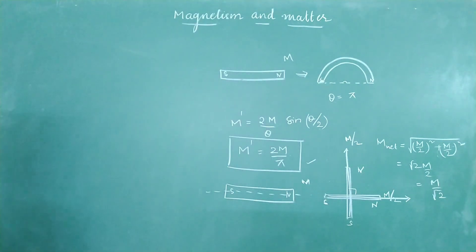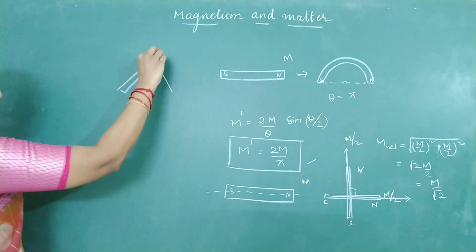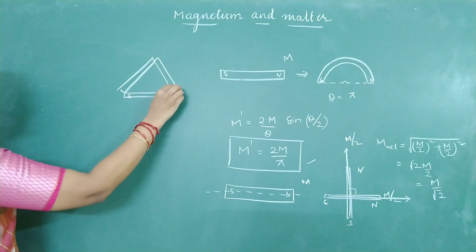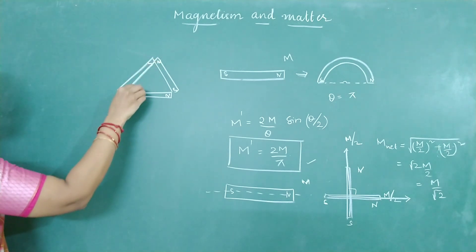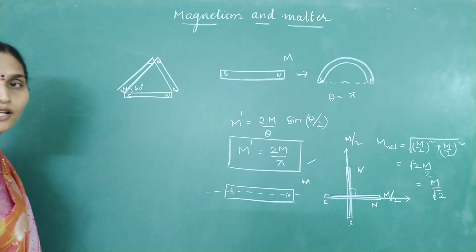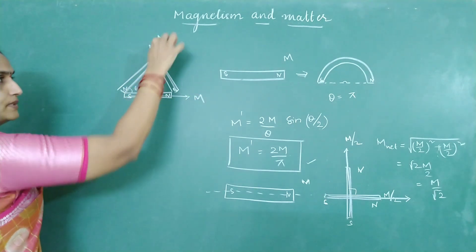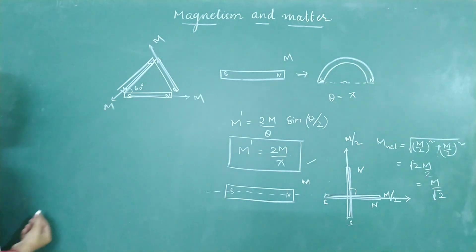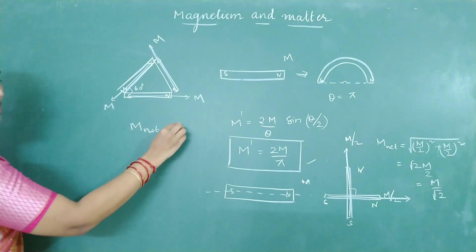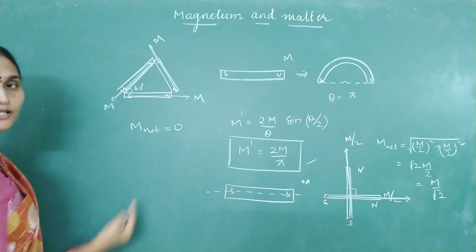Three magnets may be arranged in the form of an equilateral triangle. When solving the question, look at the polarities clearly. If south and north poles are arranged such that all three magnetic moment vectors point from south to north around the triangle, they form a closed figure. From the triangle law of vector addition, what is the resultant magnetic moment? It becomes zero. Because they are arranged with unlike poles together, we get the answer as zero.